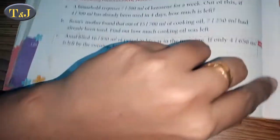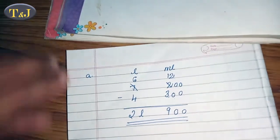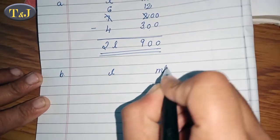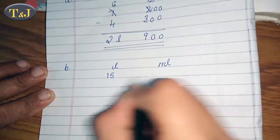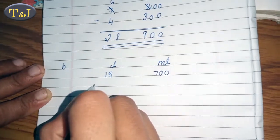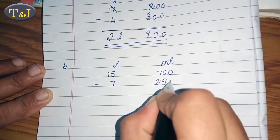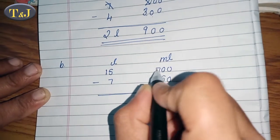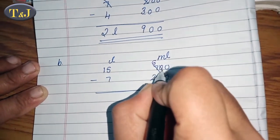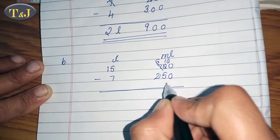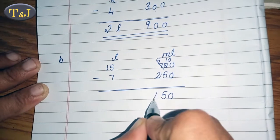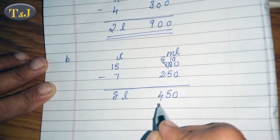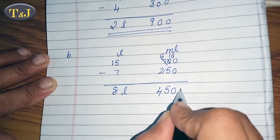Write the problem with units liter and milliliter: 15 liter 700 milliliter subtract 7 liter 250 milliliter. Then 0 minus 0 equals 0. Since 0 minus 5 is not possible, we borrow 1, making it 6 and 10. Then 10 minus 5 equals 5, and 6 minus 2 equals 4. Then 15 minus 7 equals 8. So the quantity of cooking oil left is 8 liter 450 milliliter.